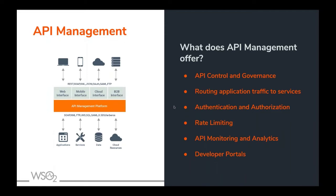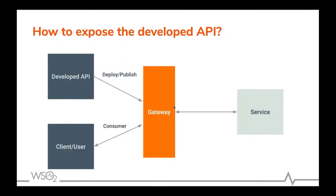Now we'll discuss how a service is wrapped and an API is introduced. An application developer like the Flight Information System needs a place to develop the API. Once you develop an API, you publish and deploy it to the gateway — a place where application developers can access it. Once deployed to the gateway, third-party or internal applications can access the gateway and get data from the service. I'll move to a demo and show how this is done using WSO2 API Manager 3.0.0.